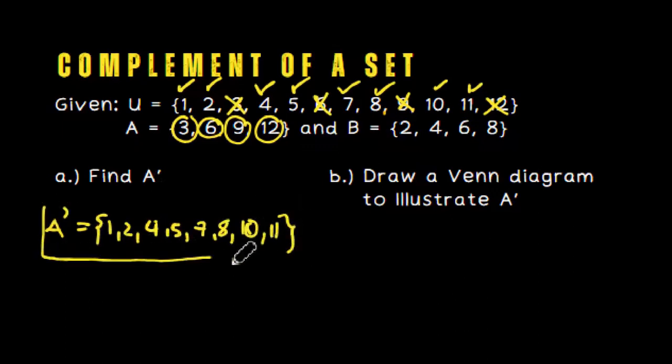Therefore, the complement of the given set is 1, 2, 4, 5, 7, 8, 10, 11. And now, to visualize the complement of a set, let us draw a Venn diagram here.